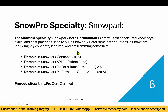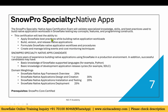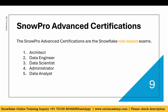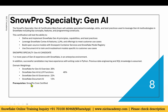The second specialty certification is Native Apps, which has its own set of questions. The third is the GenAI certification, covering topics like LLMs and ML concepts. These three specialty certifications are AI/ML-related. To take any specialty certification, you need to have completed the SnowPro Core certification first - only then will they allow you to register.